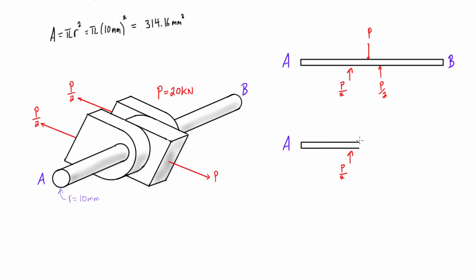So P over 2 in this case—so P is 20 kilonewtons—so P over 2 is just going to be equal to 10 kilonewtons. And then we're also obviously going to have to have that internal shear force resisting that, which is